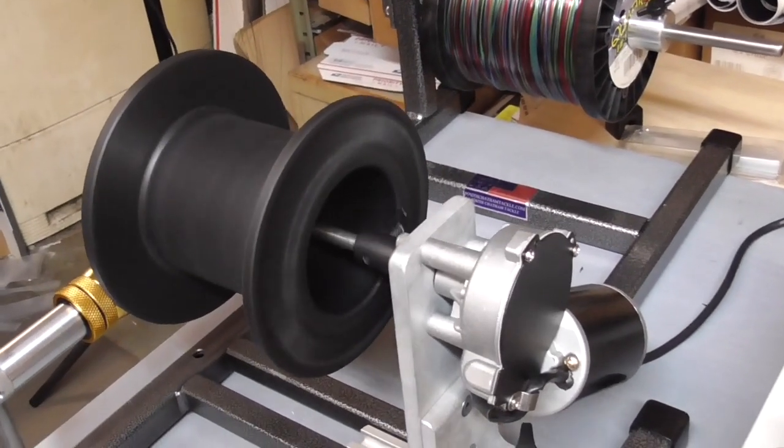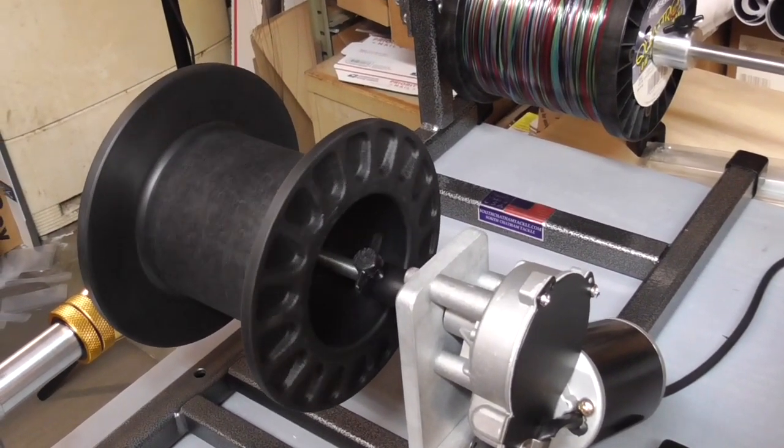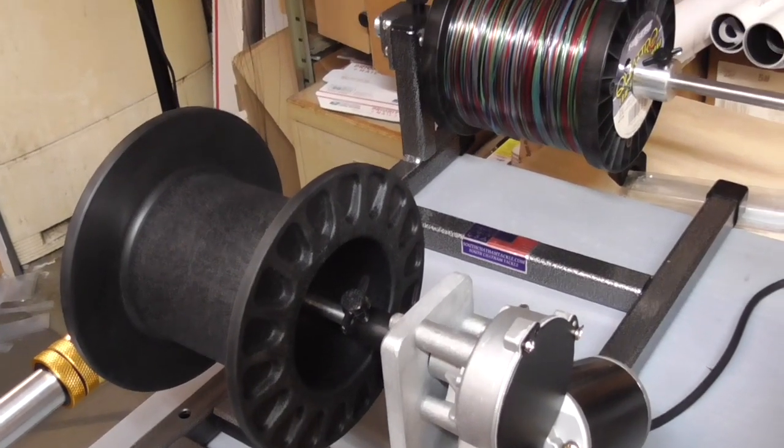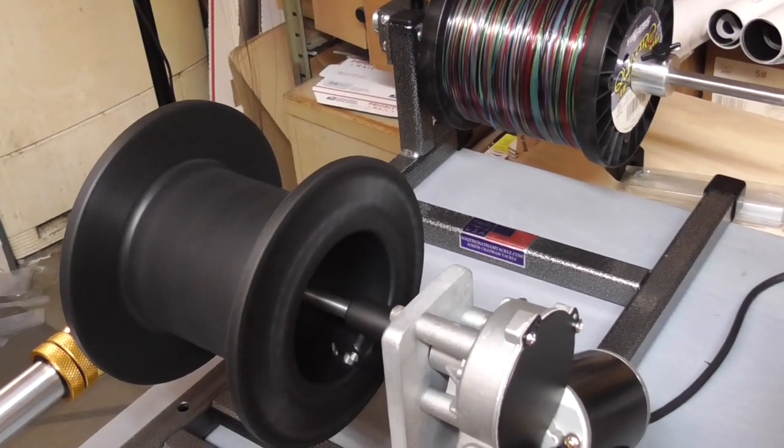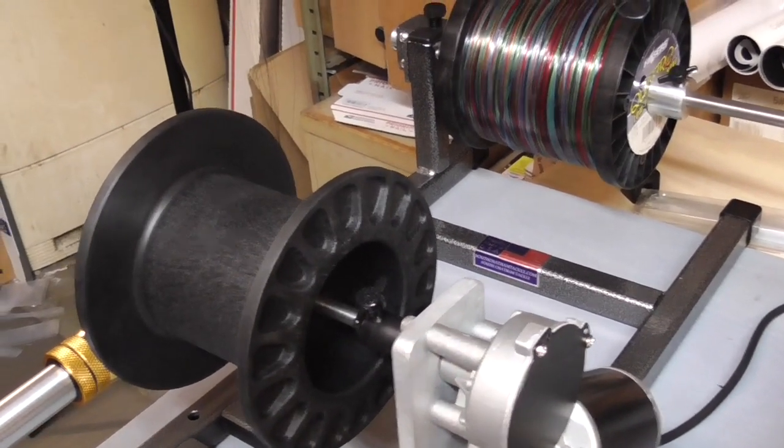If you do a lot of electric reels like the LP or Daiwa or Precision auto reels, or large reels in general—80s and 130s—I'd recommend looking into our mag brake spool holder. It was designed more with the big reel in mind.